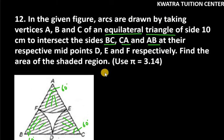Now in this case, it is given that the side of equilateral triangle is 10, so therefore the radius of each sector will be 10 over 2.